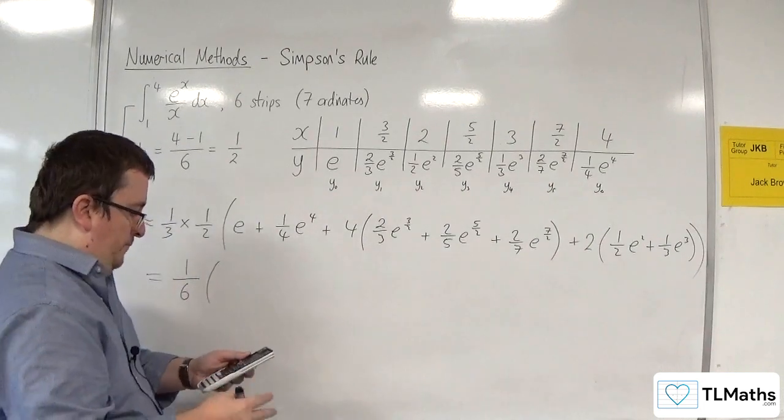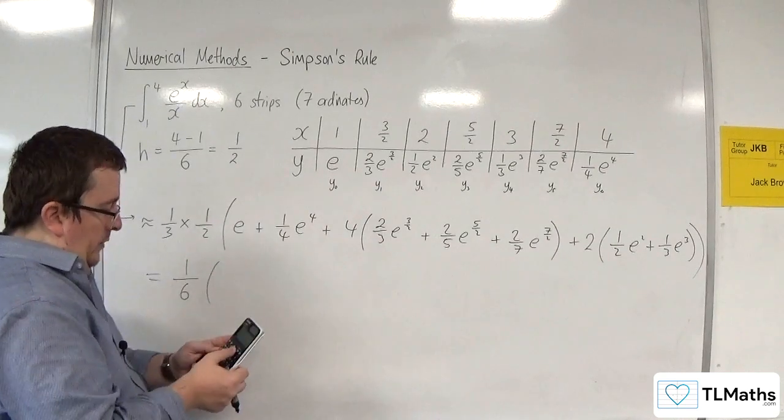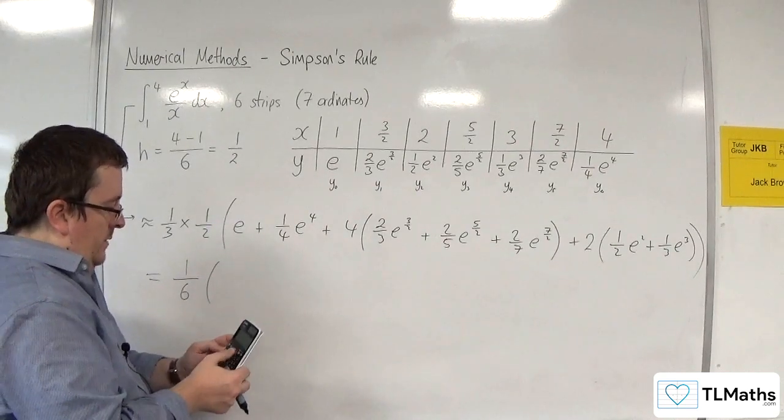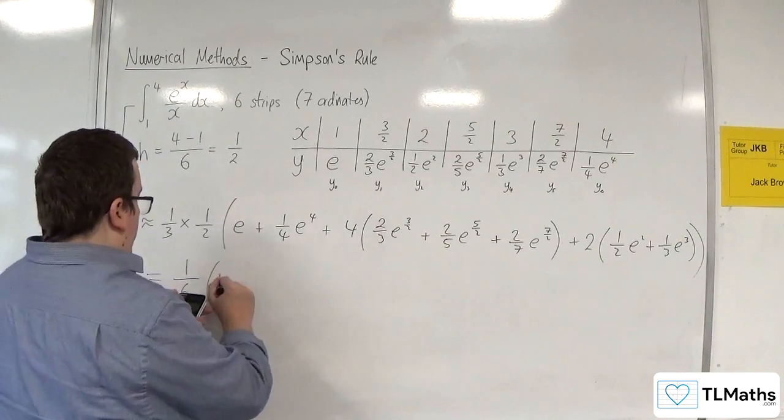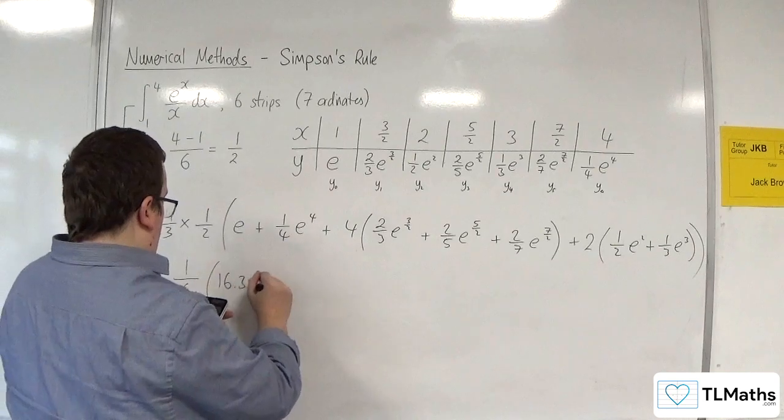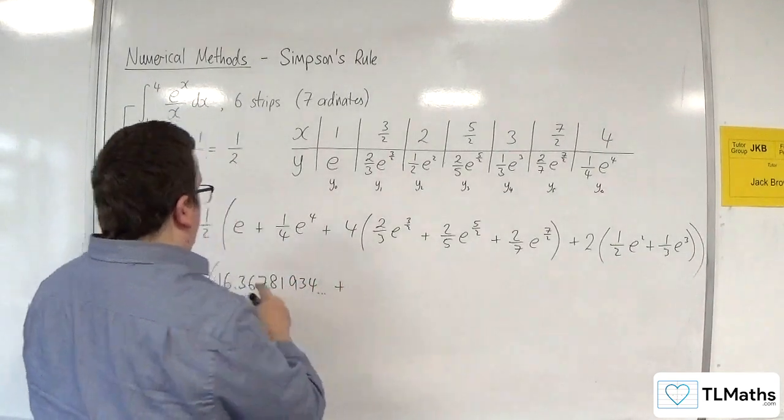I'm going to do e plus 1 quarter of e to the 4 first. So that's going to get me 16.36781934. Okay, so that's that bit.